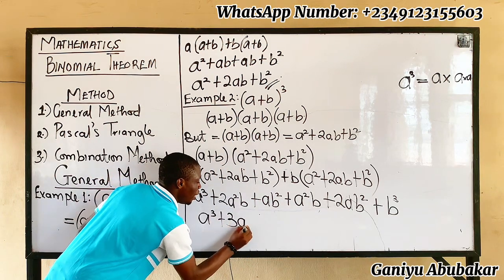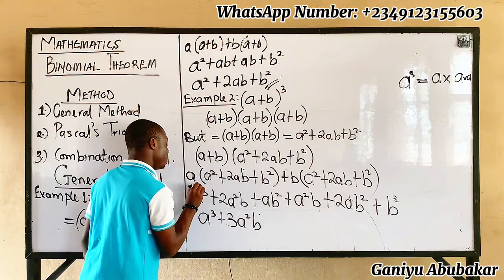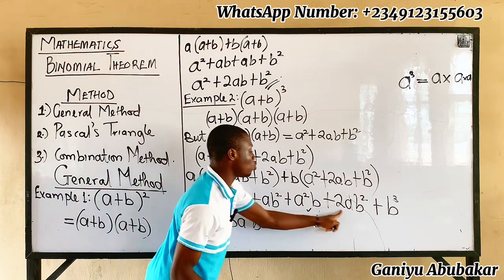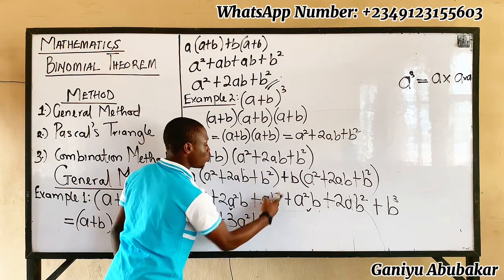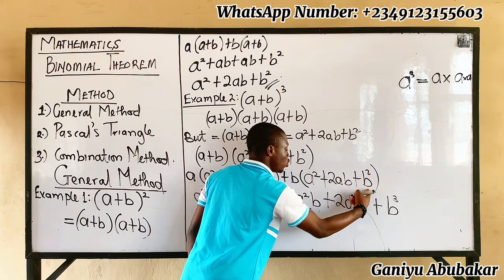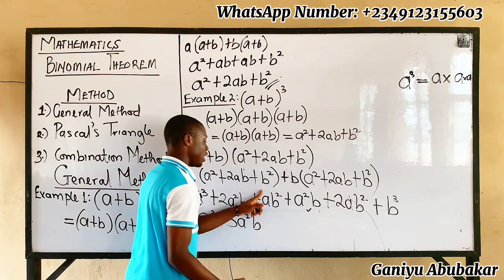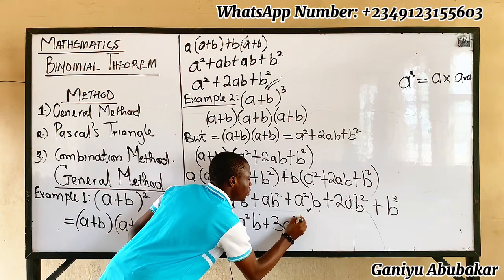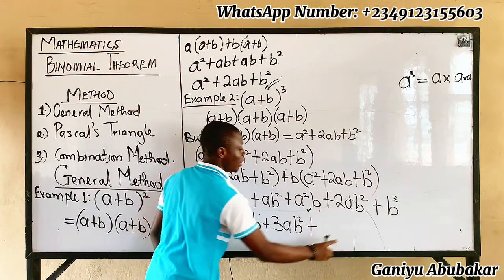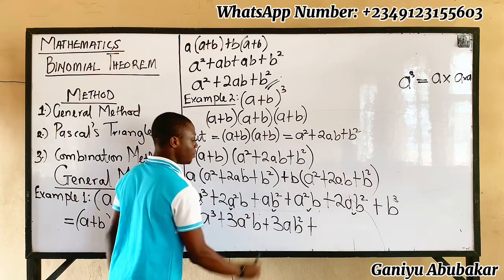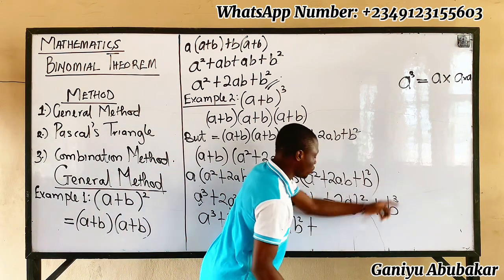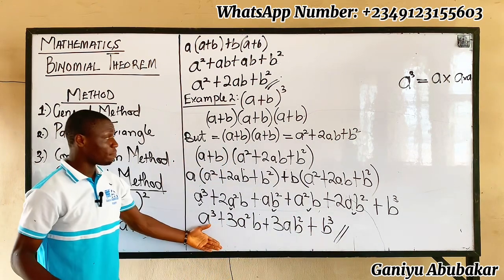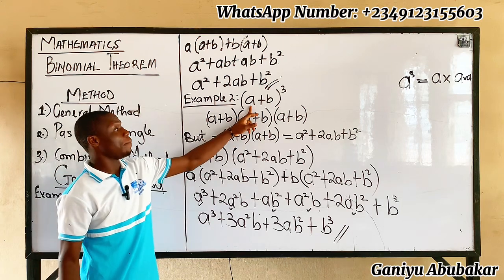So the final answer for (a + b)³ is: a³ + 3a²b + 3ab² + b³. That is the answer after expanding this term using the general method.